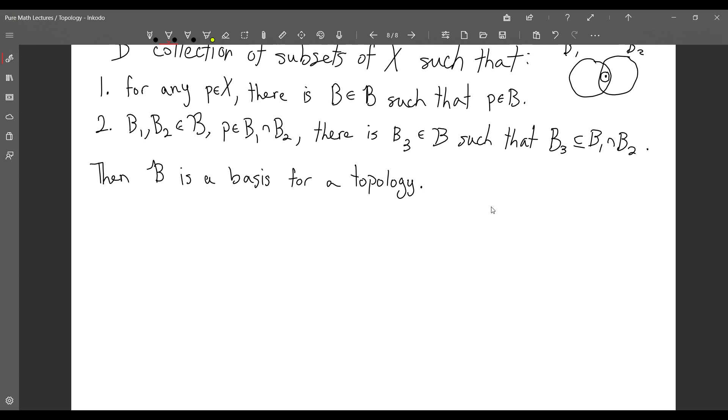This definition does not mention any pre-existing topology. This definition does not need a pre-existing topology. This basis, what it does, is it generates a topology. And the topology generated by B is the collection of sets A.